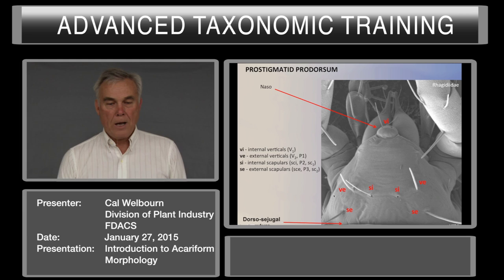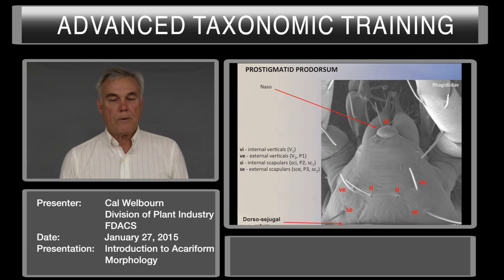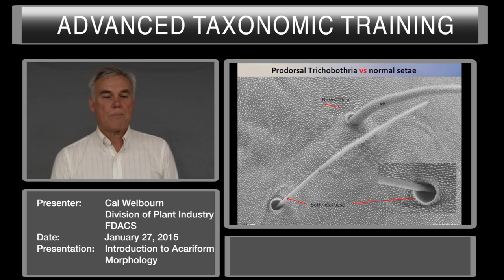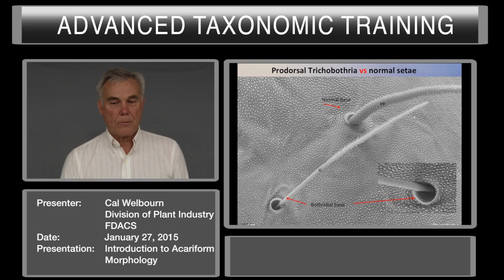The prodorsum is set off from the rest of the idiosoma by the dorsal sejugal suture. In a lot of groups you cannot see it, but if you know how many prodorsal setae to expect, it's easy to determine where the division is. Here's the bothridial base—this is important to know in Prostigmata whether the prodorsal setae have trichobothria. The external verticals would be a normal seta by comparison.